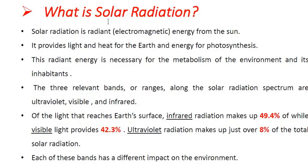Solar radiation is radiant or electromagnetic energy received on the earth from the sun. It provides light and heat for the earth and energy for the photosynthesis process. This radiant energy is necessary for the metabolism of the environment and its inhabitants, and solar radiation is necessary for all living creatures on the earth.